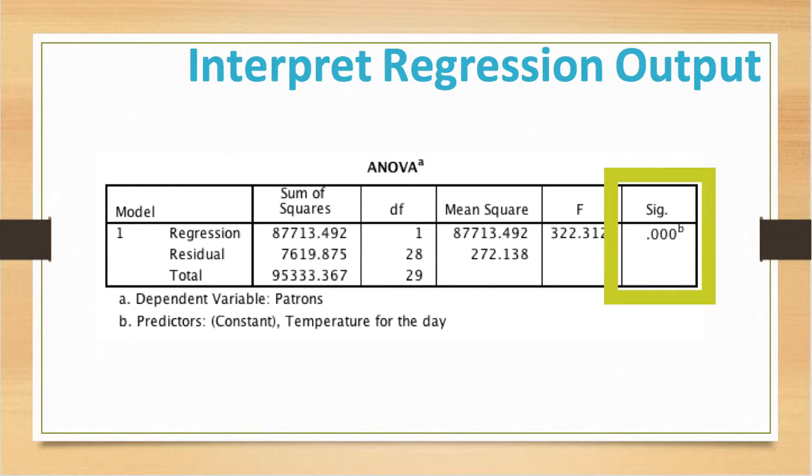The conclusion is that changes in the dependent variable resulted from changes in the independent variable. In this example, changes in daily temperature resulted in significant changes in the number of pool patrons. In short, your regression model overall predicts the number of patrons significantly well.